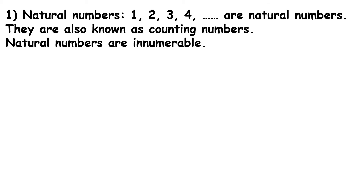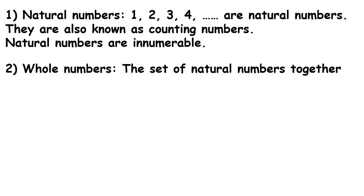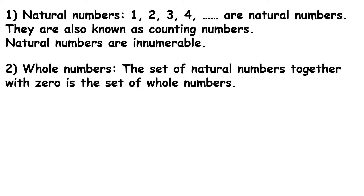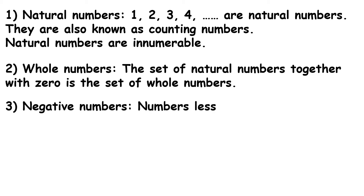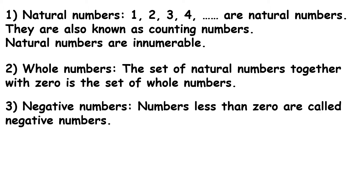The first type is natural numbers. 1, 2, 3, 4 are all natural numbers, also known as counting numbers. Natural numbers are innumerable — they never end. The second type of numbers are whole numbers. The set of natural numbers together with zero is the set of whole numbers.